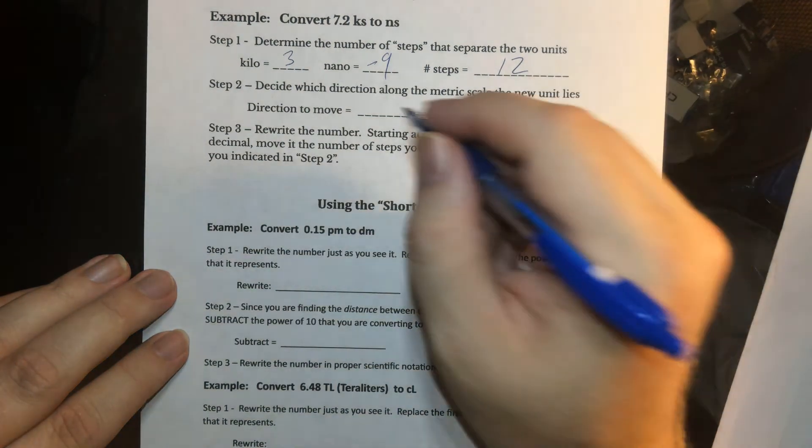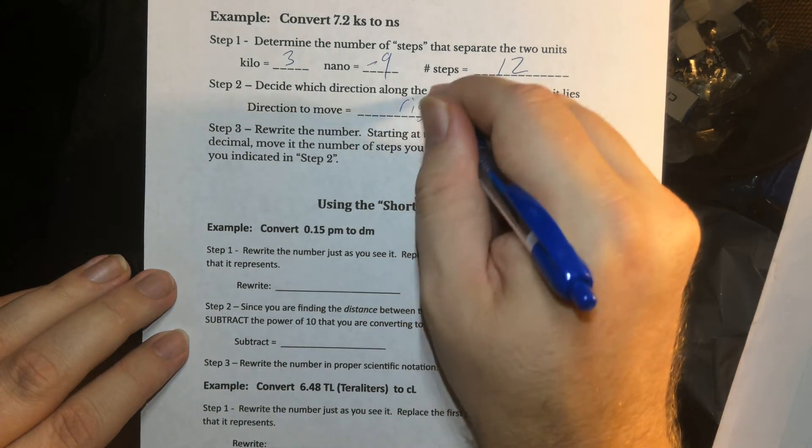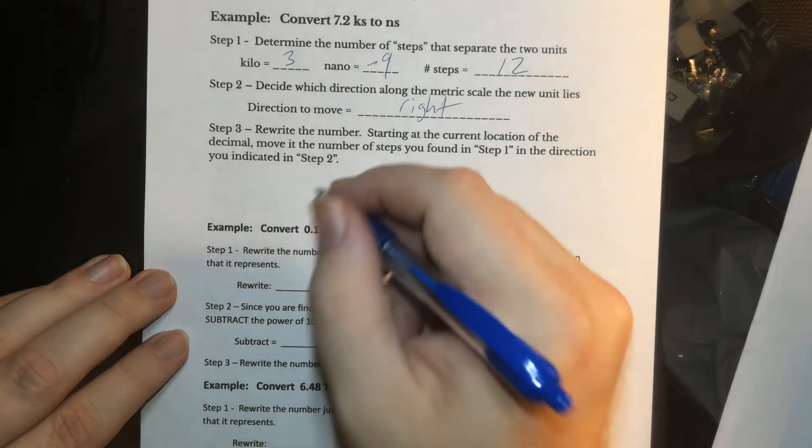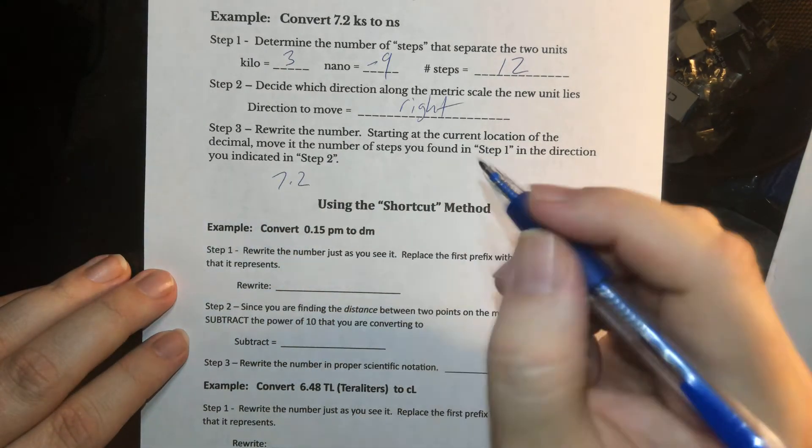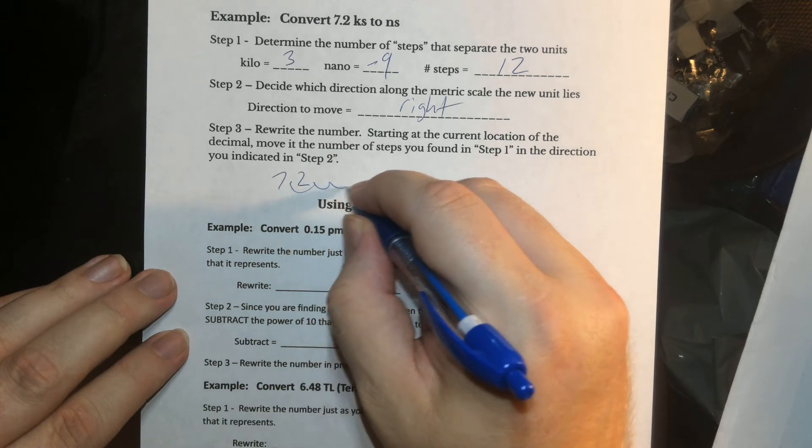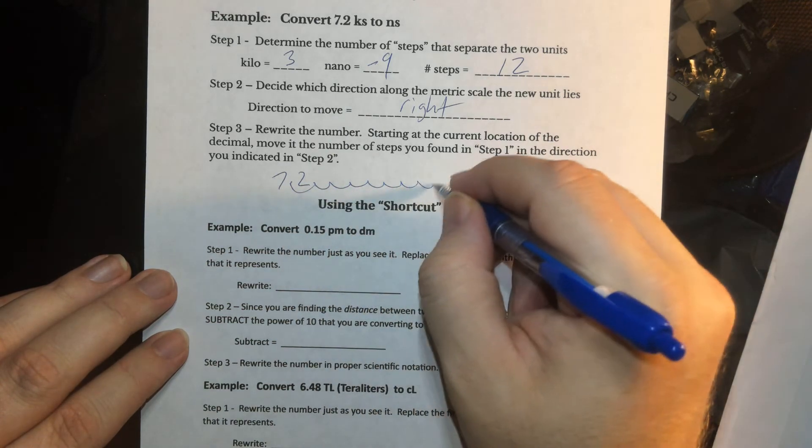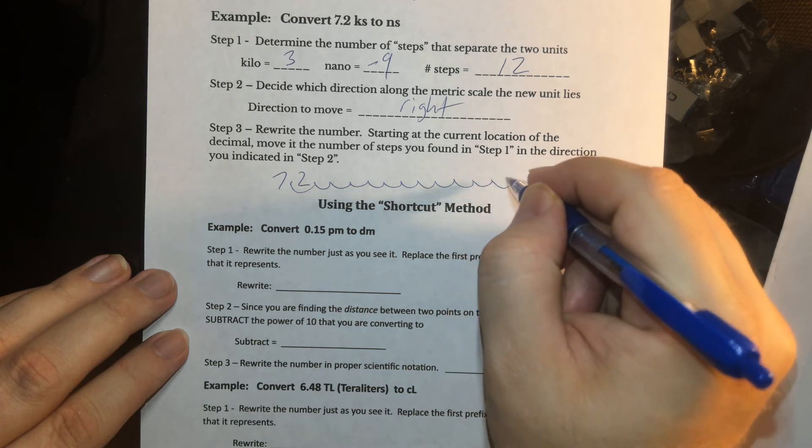So a very, very big conversion. This one is also to the right. And now we take that number down, 7.2. We move it 12 places to the right. 1, 2, 3, 4, 5, 6, 7, 8, 9, 10, 11, and 12.